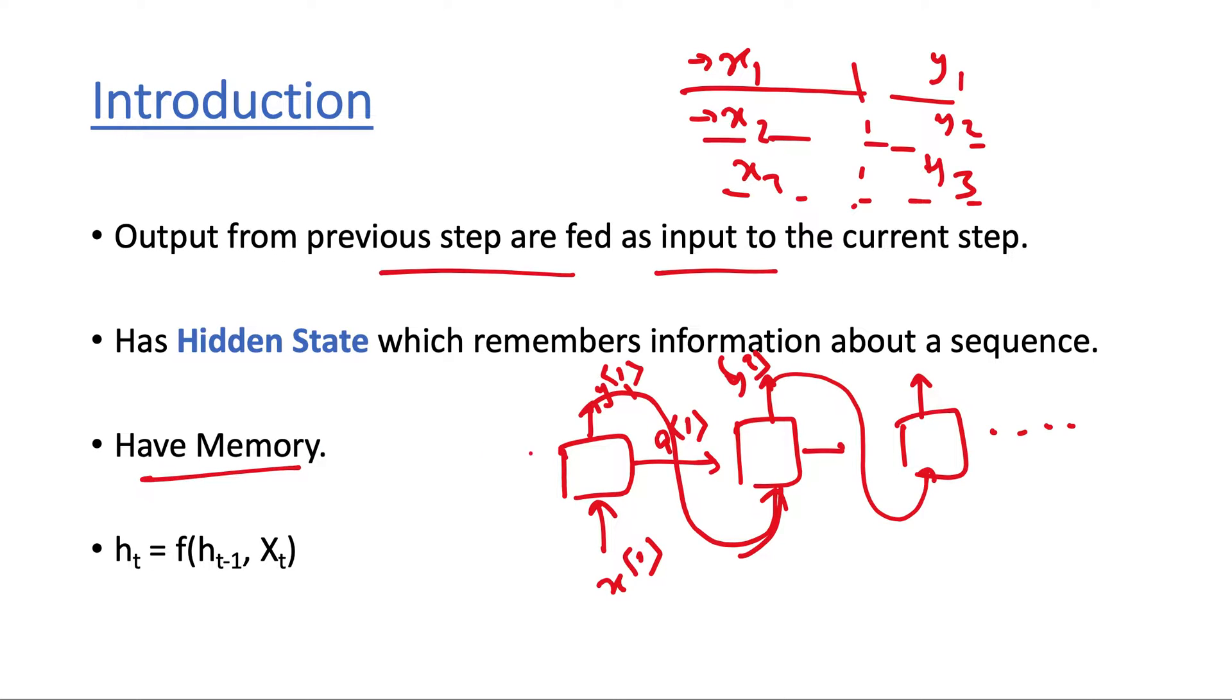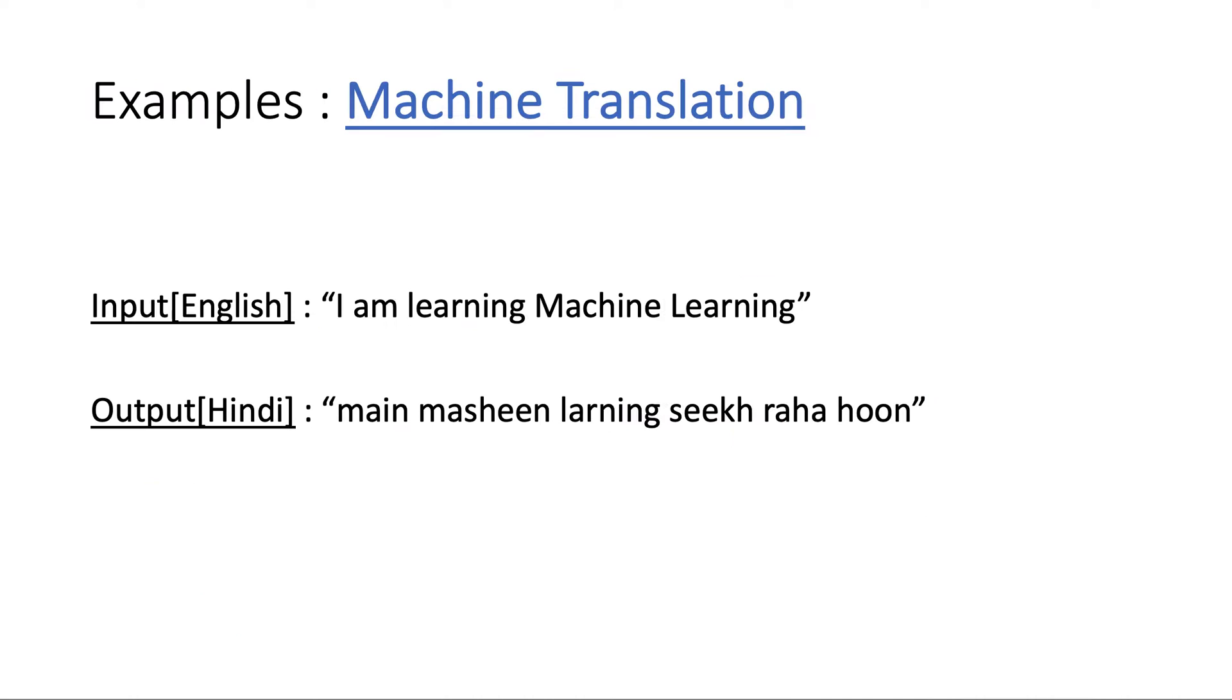Here the previous output is fed to the next output, so it has memory. You can represent it as this - the current output depends on the past output and the current state. This is how it's different from traditional neural networks.